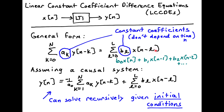If we assume the system is causal, we rewrite the equation so that only y of n is on the left-hand side, and all the previous values of y are moved to the right-hand side with a negative sign. So y of n, the output at time n, is written in terms of a weighted sum of the output at previous times plus a weighted sum of the input at the current and previous times. We can solve this recursively given a set of initial conditions, which must be specified — just as with differential equations.